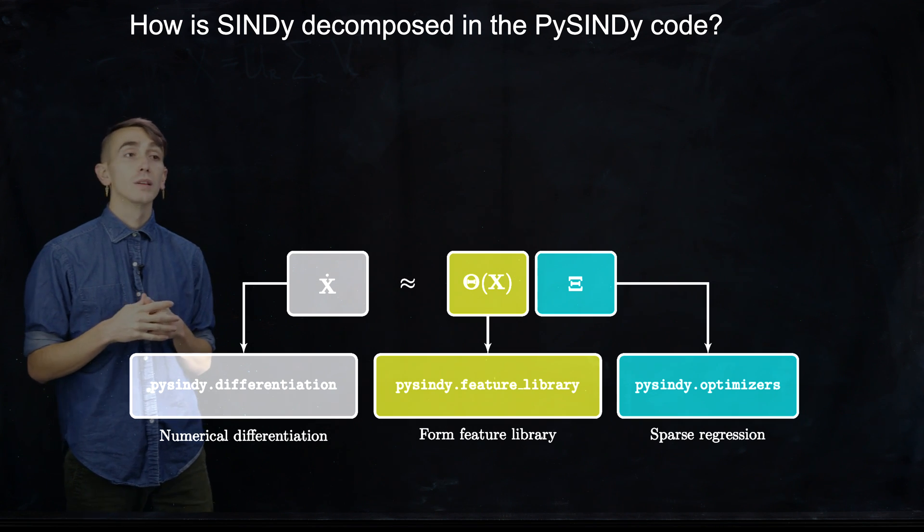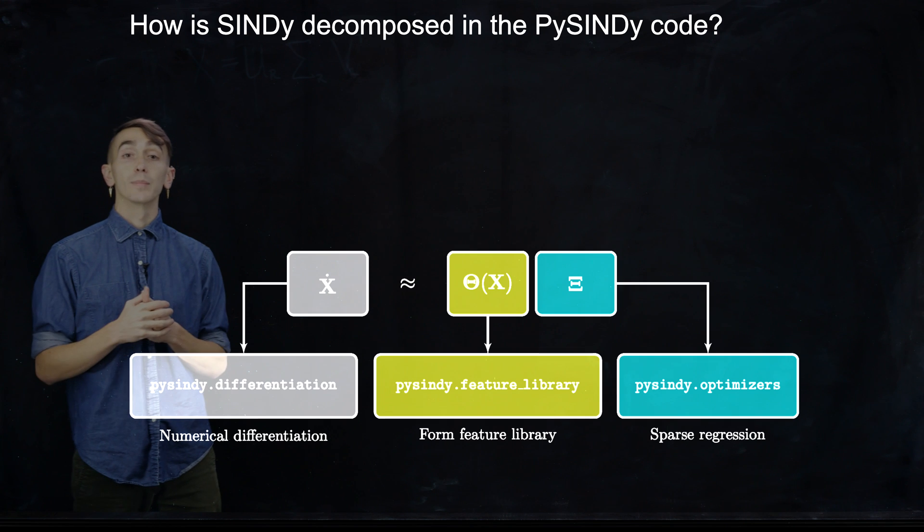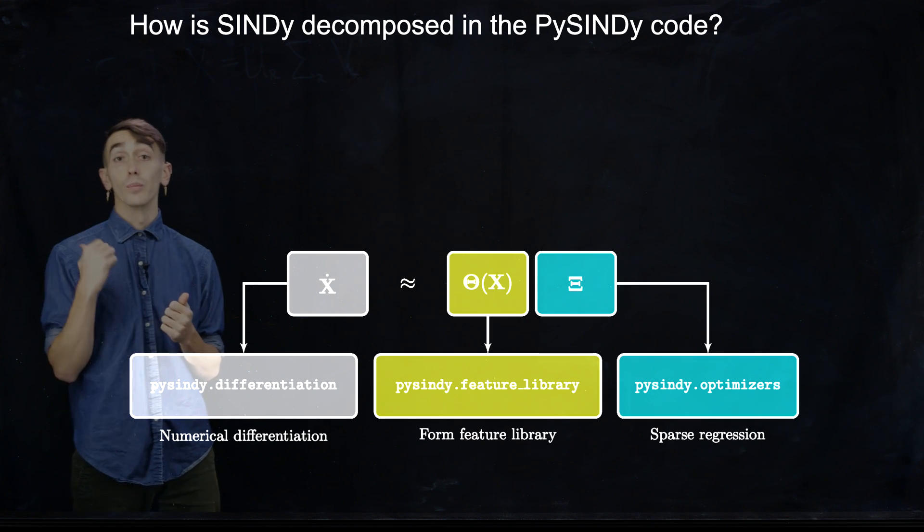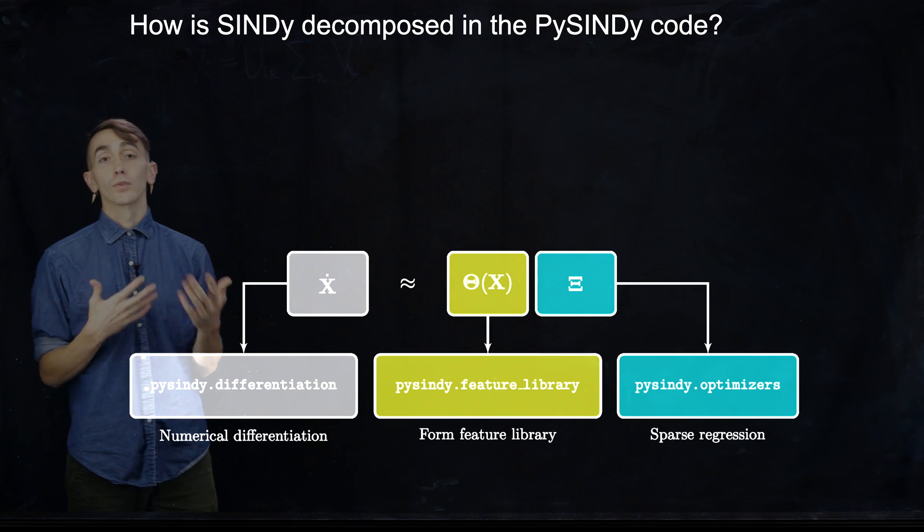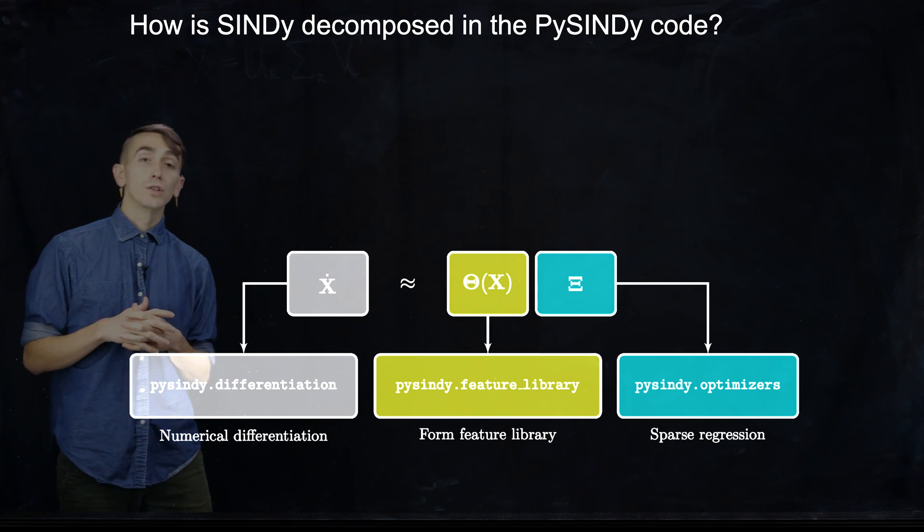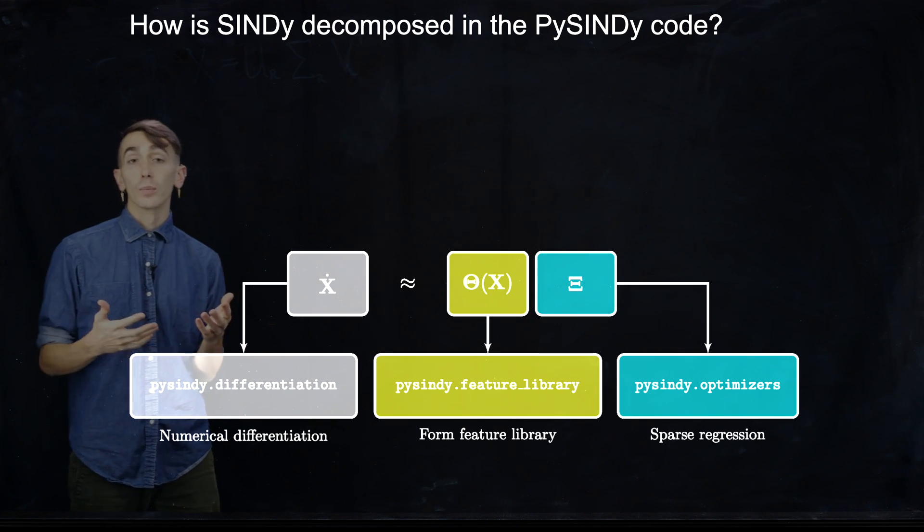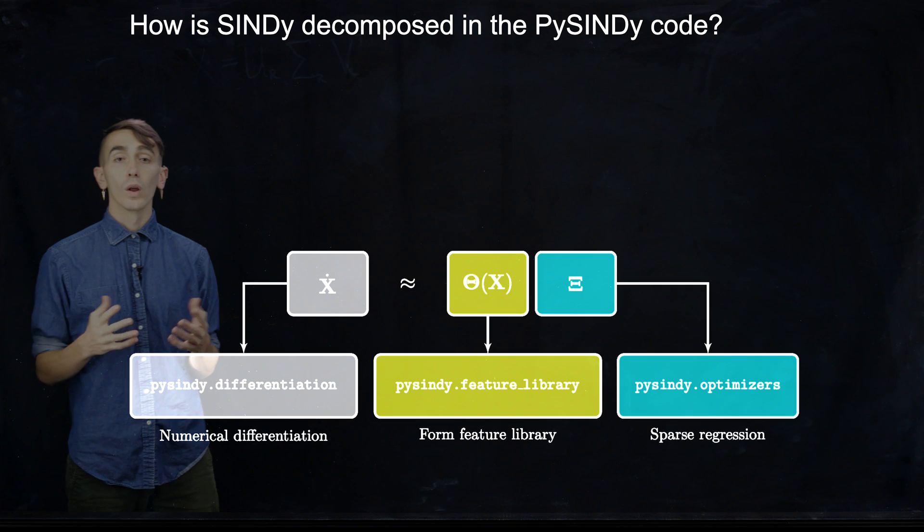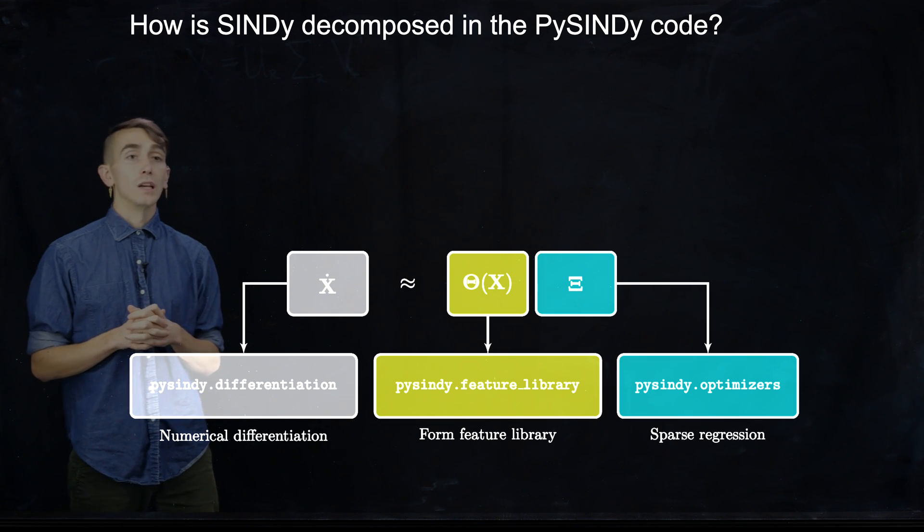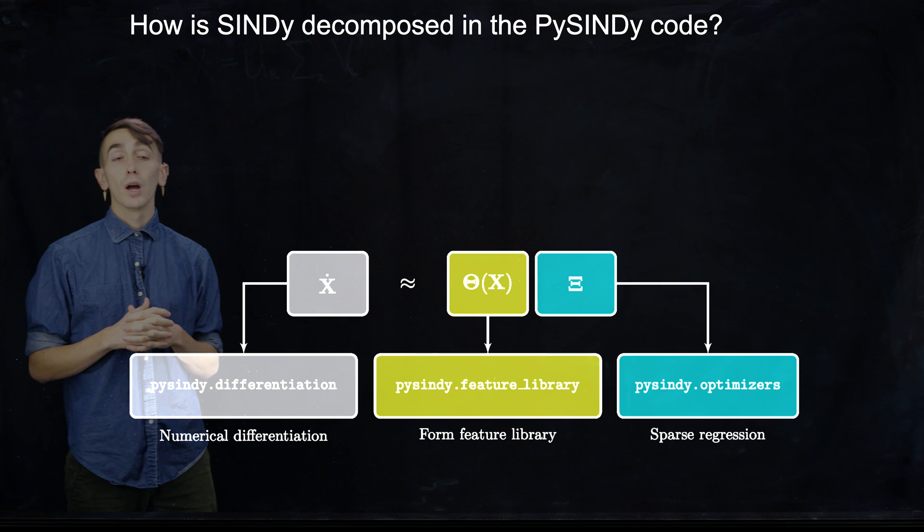And then the last thing we have is in order to determine the coefficients of those candidate terms in that last matrix, we need to solve that sparse regression optimization problem that I showed on the previous slide. And in order to do that, we have a number of sparse regression optimizers which vary in how they solve the problem and also which sparse regularizer is used, whether it be the L0 norm or the L1 norm or what have you.